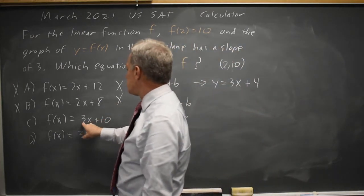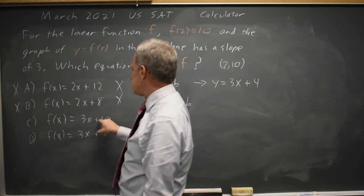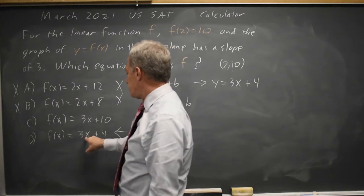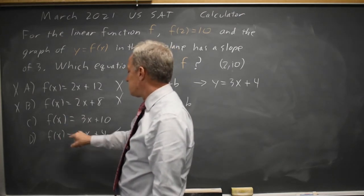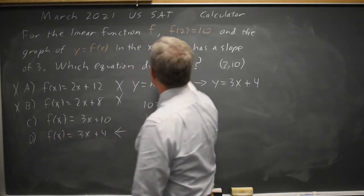If x equals 2, I get 3 times 2 is 6 plus 10 is 16, not 10. Here, 3 times 2 is 6 plus 4, that does equal 10, which is given as f of x for x equals 2.